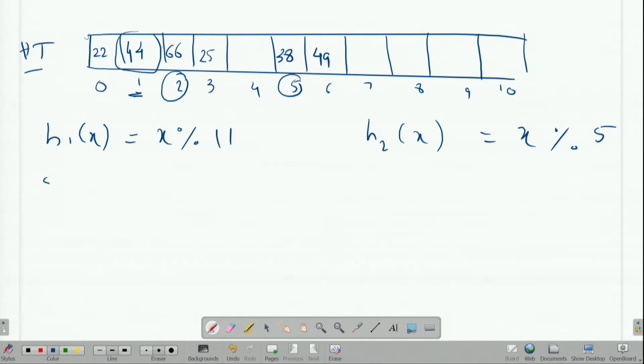If I take an example, say 59. 59 mod 11 gives 4. Since slot 4 is already empty, we can keep our element there. There is no need to use the second hash function.